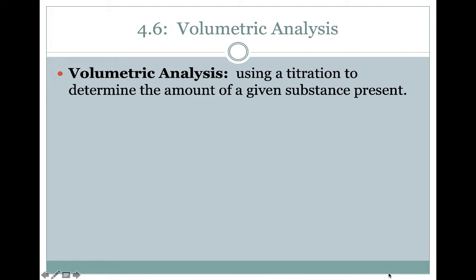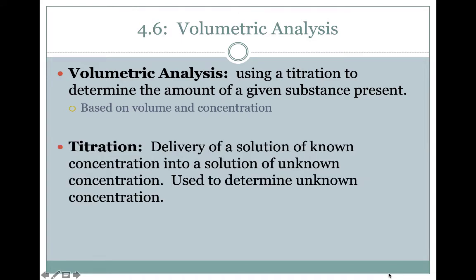Volumetric analysis is a method where we use a titration to determine the amount of a given substance present in an unknown solution. It's based on volume and concentration, hence the term volumetric analysis. A titration is a method by which we deliver a solution of known concentration into a solution of unknown concentration, and use that to determine the unknown concentration.